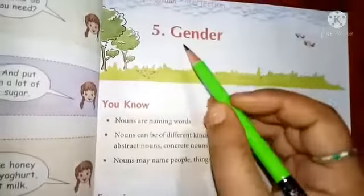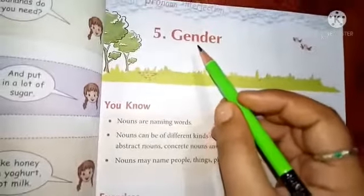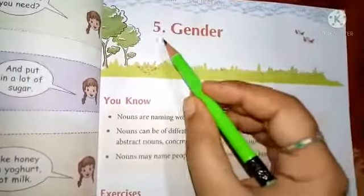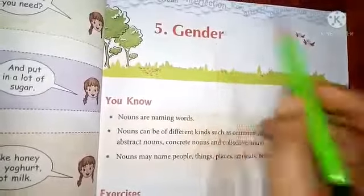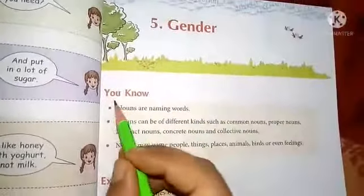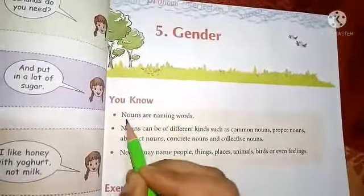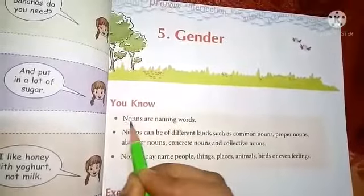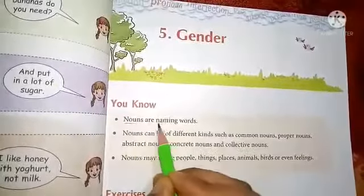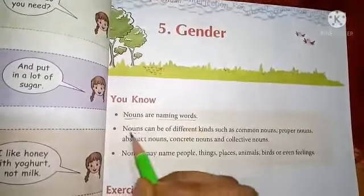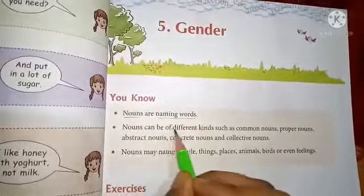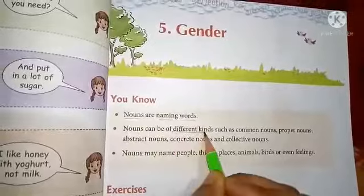Let's come to the new chapter, chapter number 5, Gender. You know, nouns are naming words. A lot of people know that nouns are naming words. Noun can be of different kinds.